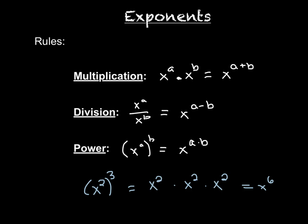Or if you wanted to write them all out: x squared is x times x, so each x squared becomes x times x. If you multiply all of these together, you have six x's total — so x to the sixth. The shortest way, as the power rule states, is just to multiply the two powers: two times three is six.